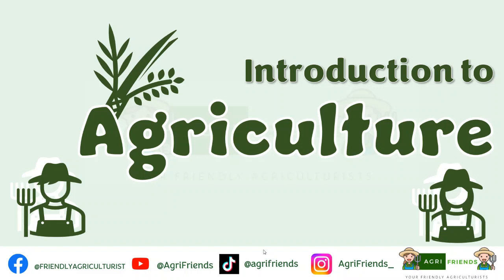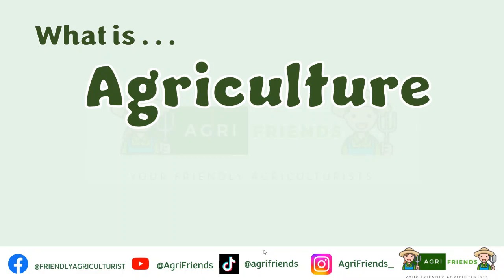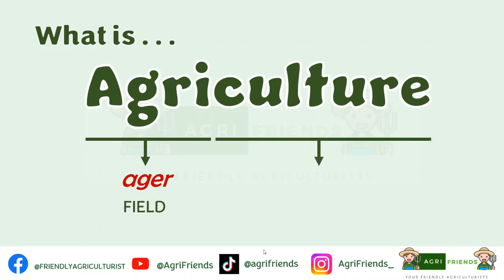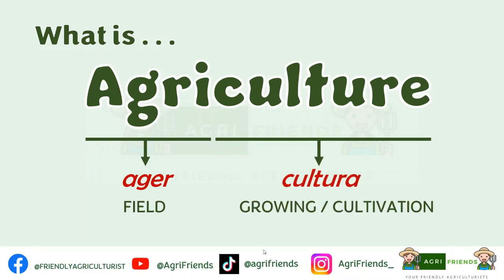The key to easily define any word is by knowing their etymology, or the origin of words. The word agriculture originated from two Latin words. The word agri, or the term agri, comes from the word ager, meaning field. While the word culture comes from the word kultura, meaning growing or cultivation. Thus, the literal translation of the word agriculture is field growing or field cultivation.